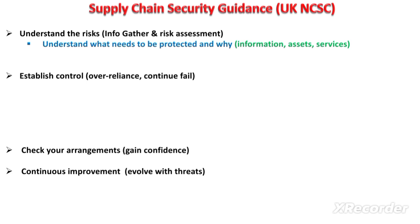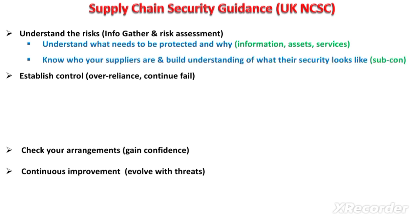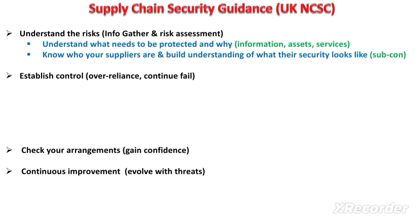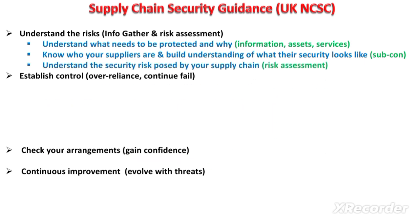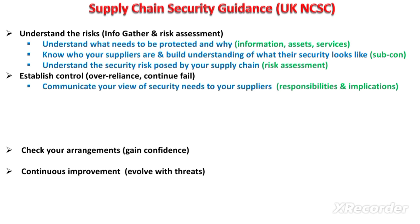The second principle is to know who your suppliers are and build an understanding of their security, which may also include the security of subcontractors. The third principle is to understand the security risk posed by your supply chain by performing a risk assessment. The fourth principle is to communicate your view of security needs to your supplier, which may include supplier responsibilities and the implications for not adhering to your supply chain security controls.